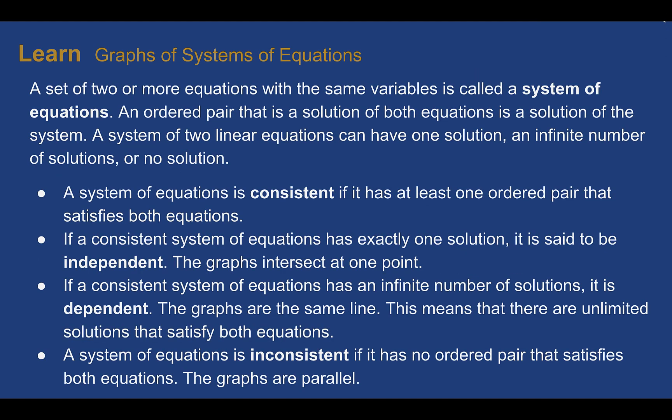Graphs of systems of equations. A set of two or more equations with the same variables is called a system of equations. An ordered pair that is the solution of both equations is the solution of the system. A system of two linear equations can have one solution, an infinite number of solutions, or no solution at all.